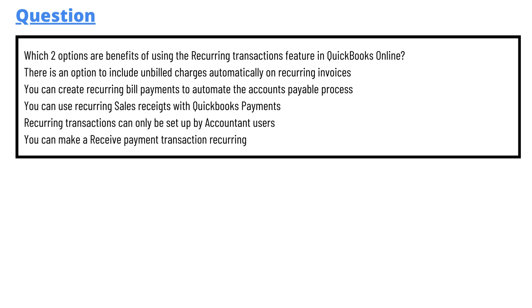The options are: there is an option to include unbilled charges automatically on recurring invoices; you can create recurring bill payments to automate the accounts payable process; you can use recurring sales receipts with QuickBooks Payments; and recurring transactions can only be set up by accountant users; or you can make a receive payment transaction recurring.